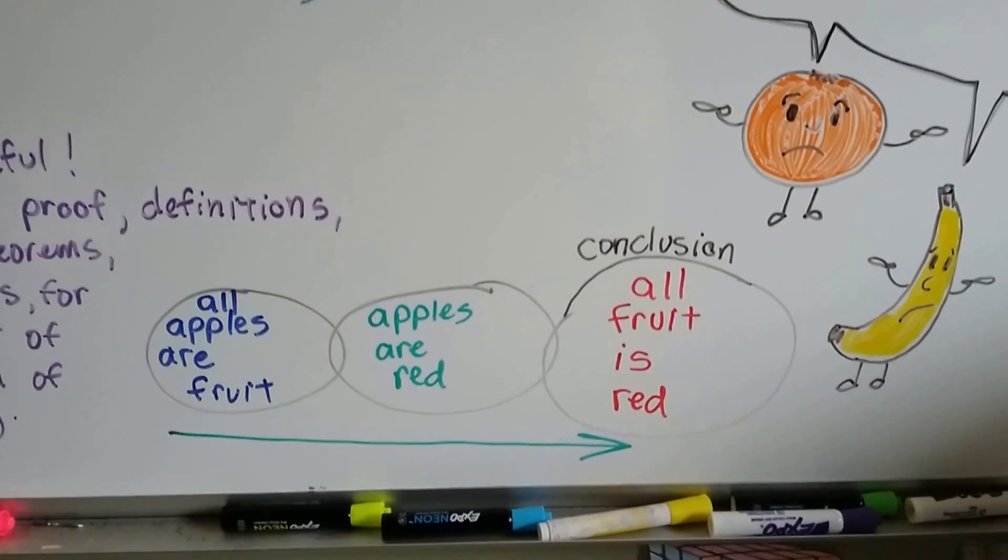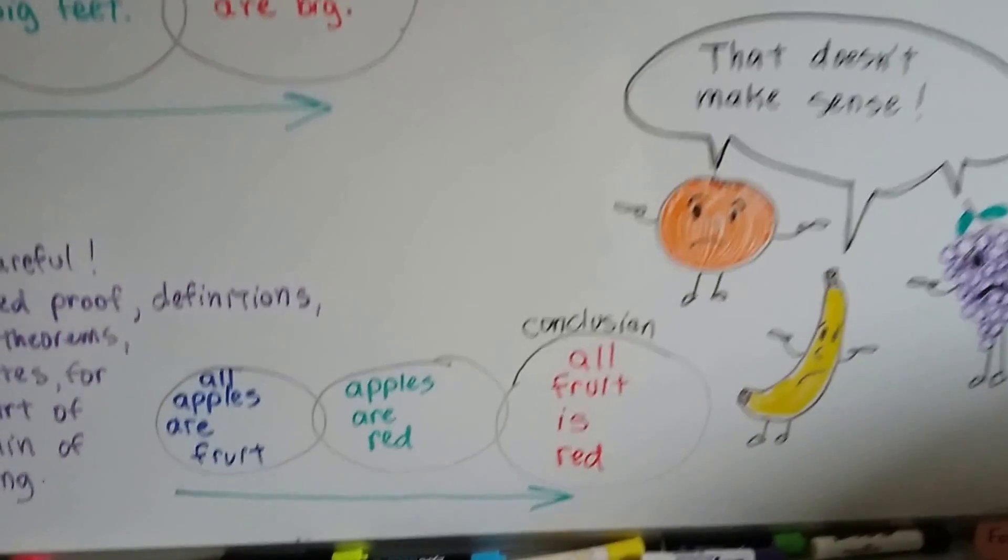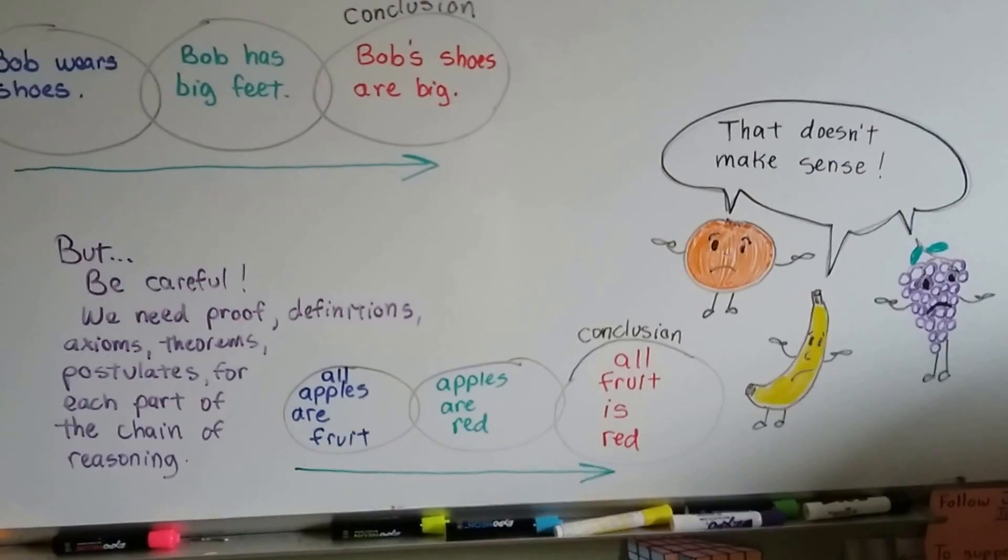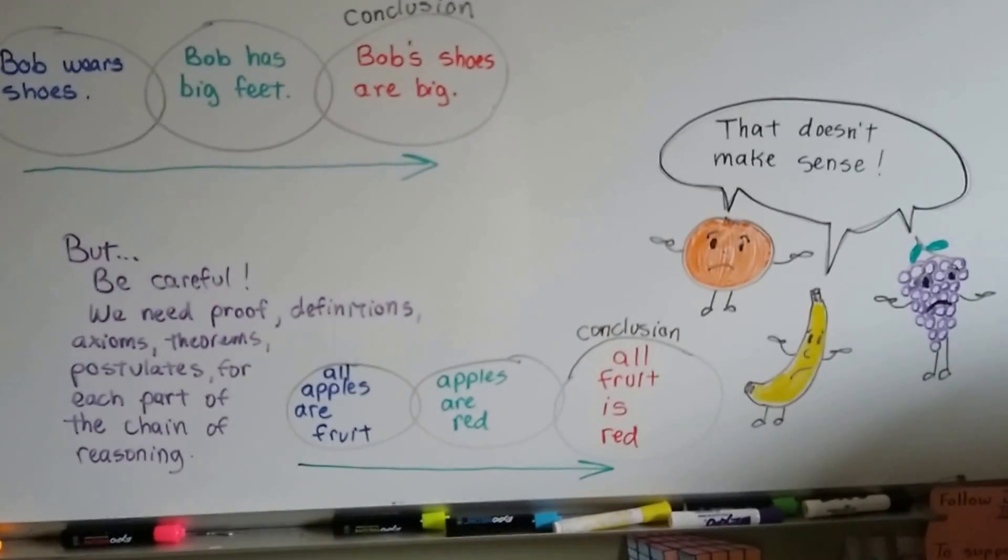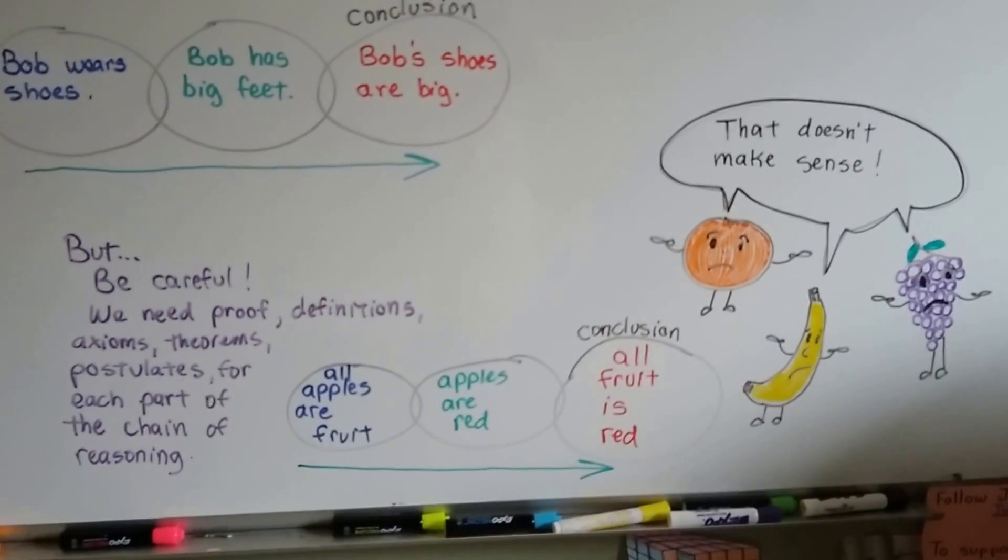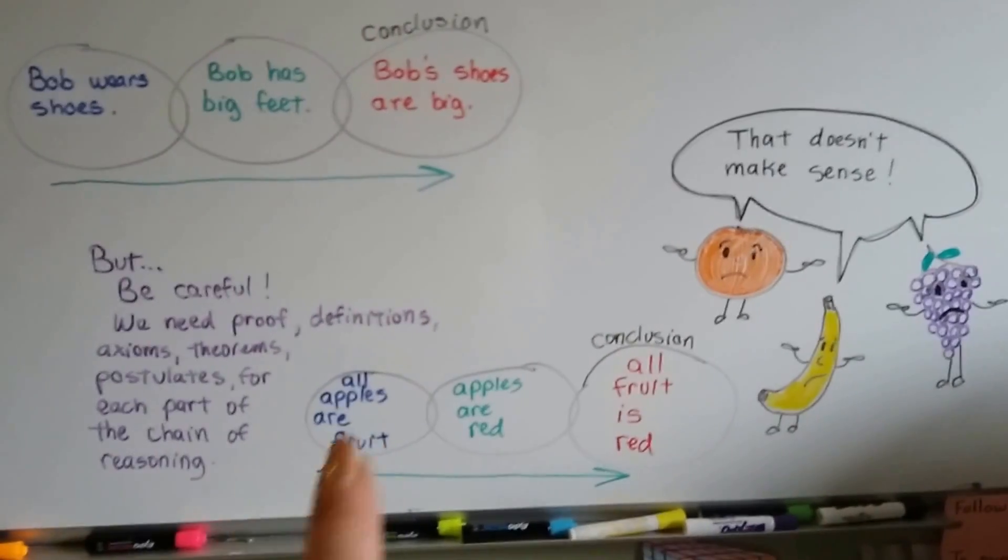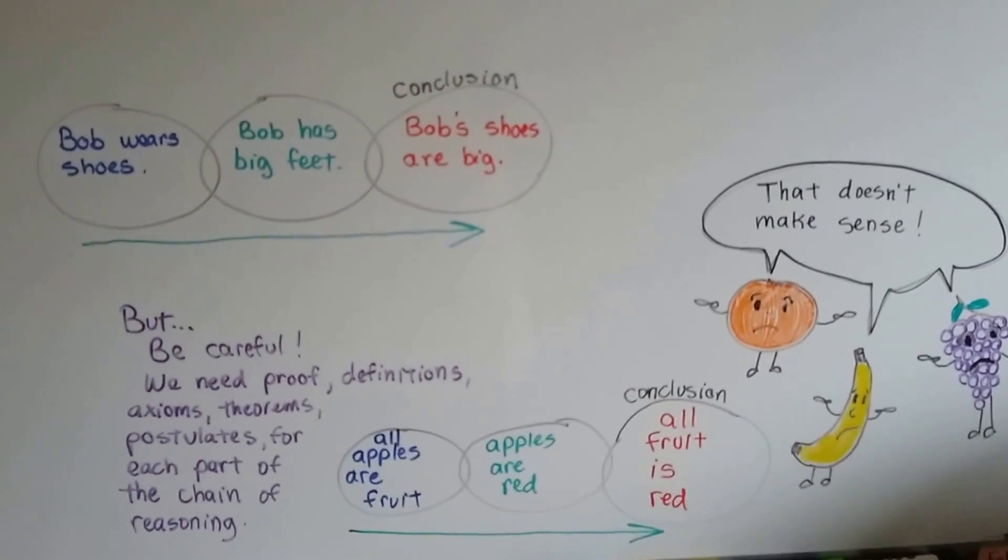So the conclusion is that all fruit is red. The orange, the banana, and the grapes are not going to agree with that. Because it doesn't make sense. An apple wouldn't have any trouble with that and a tomato wouldn't either. Did you know a tomato is a fruit? But that's not true, is it? So if we have proof along the way, we know we'll come up with a true conclusion.